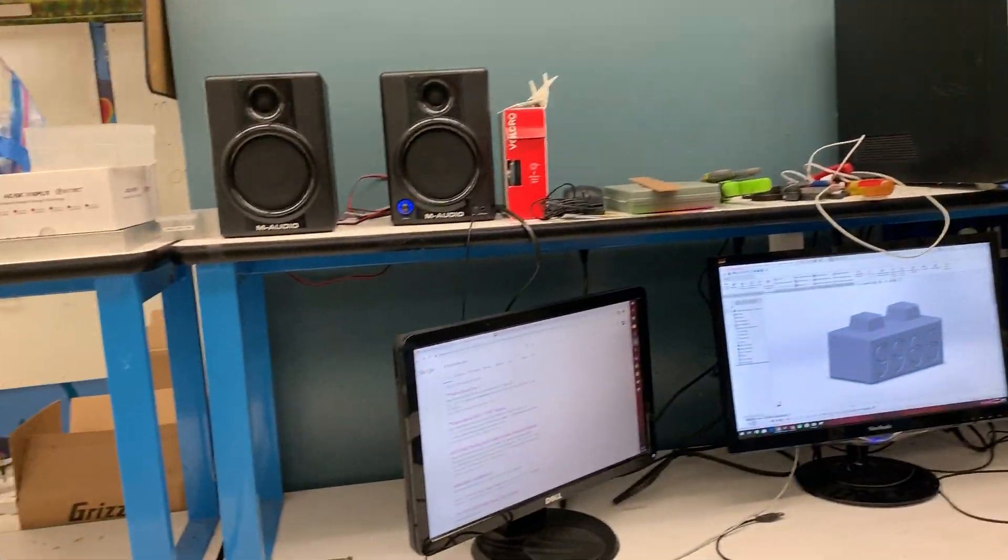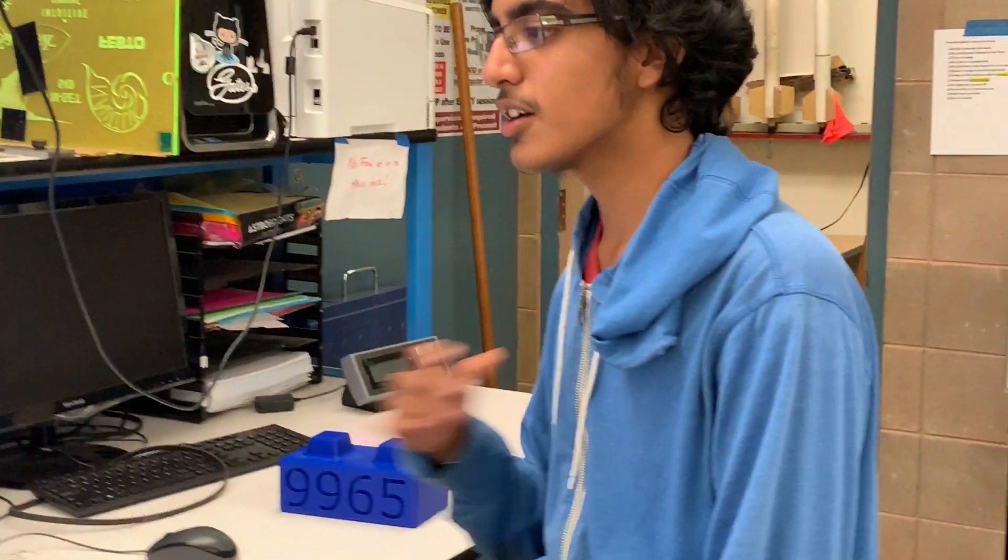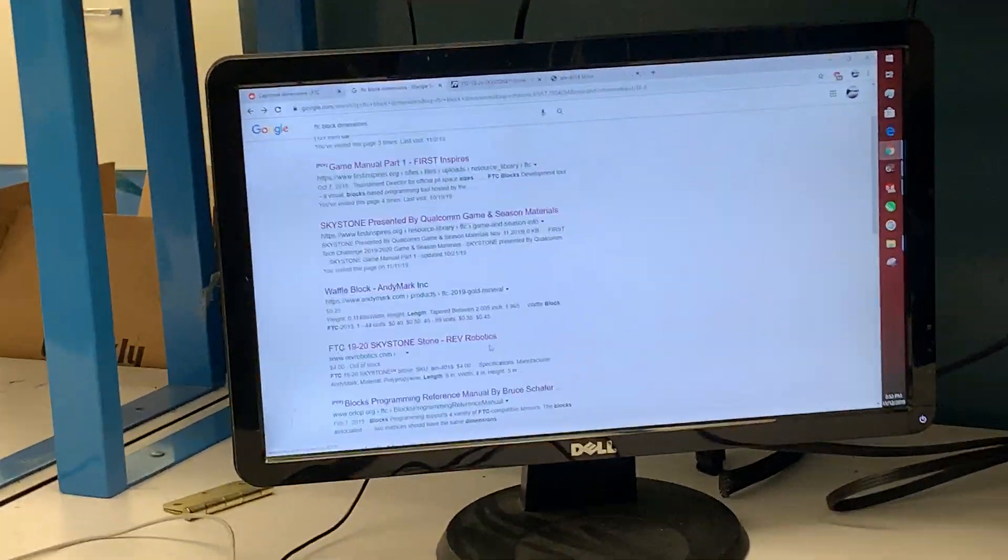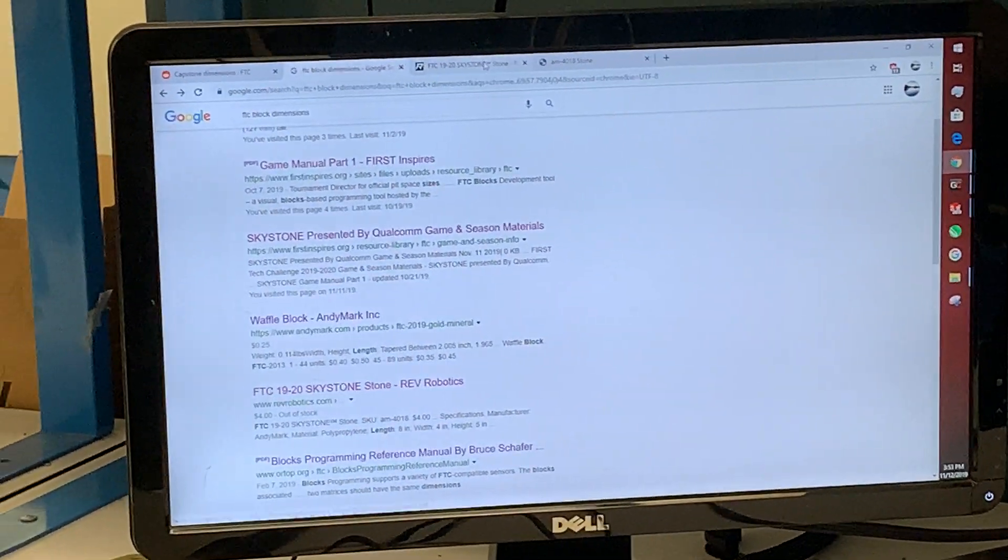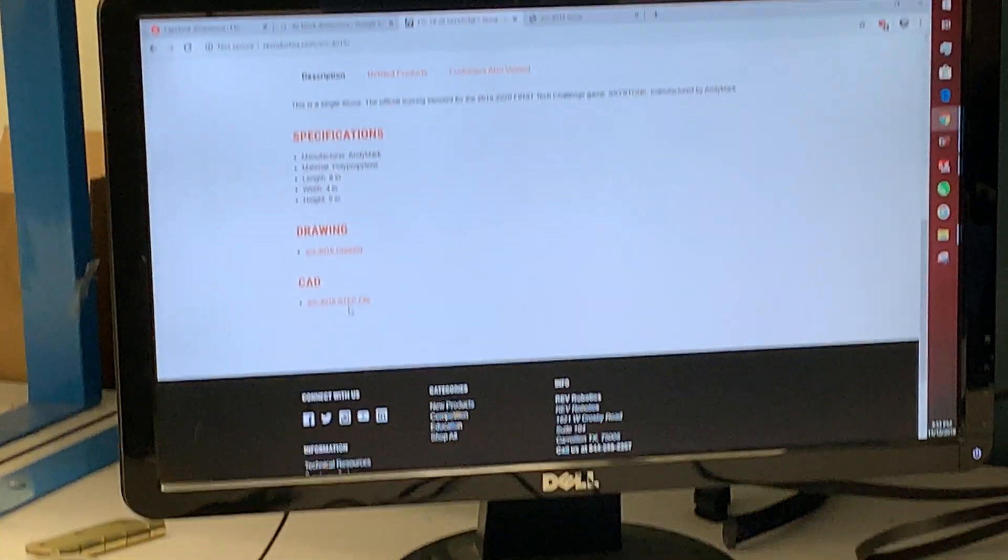Then you need to figure out what the block dimensions are, which is what we based our capstone off of. If you go over here and search up FTC block dimensions and click this link to Rev Robotics, it brings you to this site. What we're looking for is the drawing and the CAD.